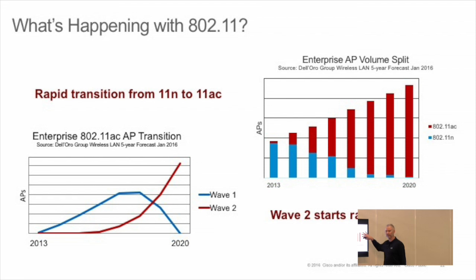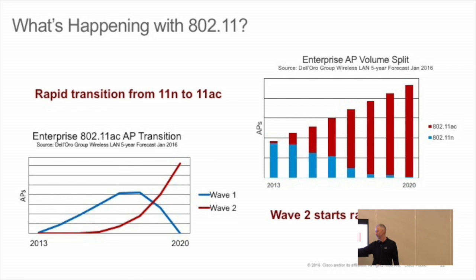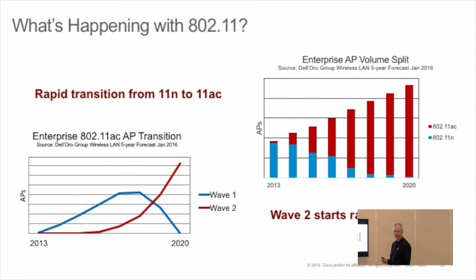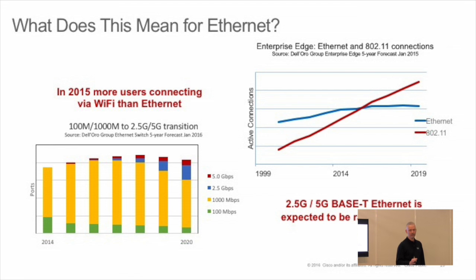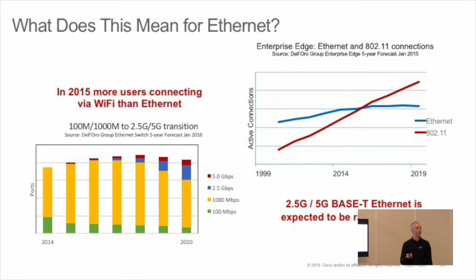This is updated for 2016. Here's the transition from 802.11n to 802.11ac. They're guessing that by 2020 it's all 802.11ac. Here's the estimated transition from wave 1 to wave 2 — current Deloro predictions say we'll start ramping wave 2 around 2016. Wave 2 is offering anywhere from a gig to 3 or 4. We're seeing that around 2015, more people are connecting via Wi-Fi than Ethernet. By 2020, we think 2.5G and 5G will be about 25% of the market.